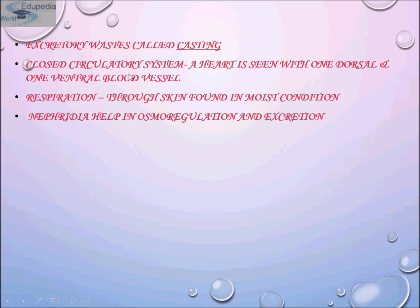Now for the circulatory system: annelids have a closed circulatory system, meaning a heart is seen with one dorsal and one ventral blood vessel. Characteristics of the circulatory system vary within the phylum.